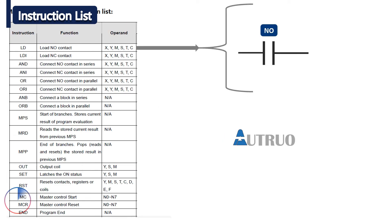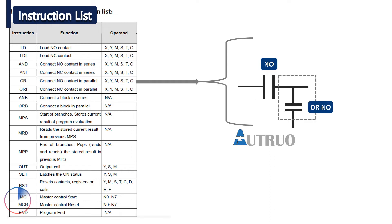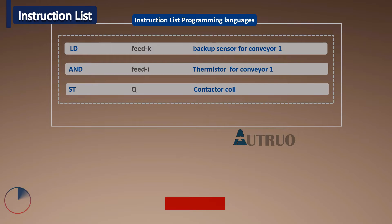LD means normally open contacts, and LDI on the other hand means normally close contacts, while ORI means normally open contacts in parallel, and ANI means normally close contact in parallel. Let's look at a typical example.